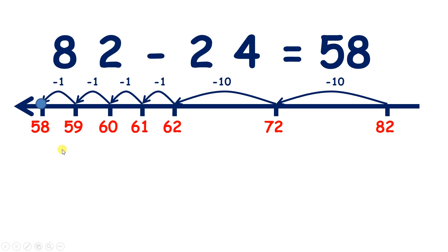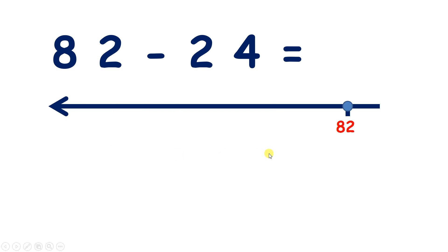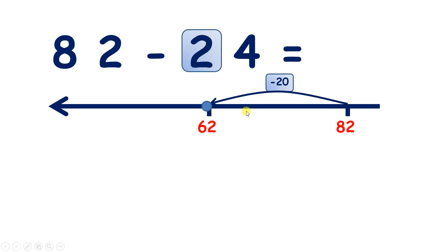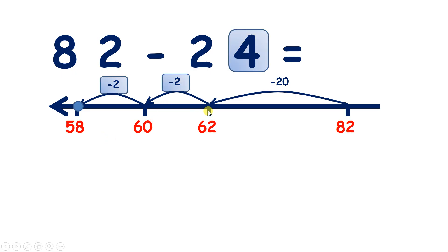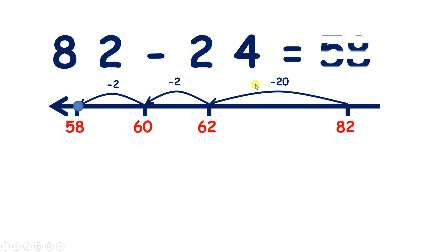But how could we do this in fewer steps on a number line? Let's subtract 20 all in one go. If we start with eight tens and take away two tens, we have six tens and still have those two units, so we have 62. That's our tens dealt with. Now we need to subtract our four units. If we take away two, we'll have 60. But we want to take away four, so if we've taken away two, we need to subtract two again to give us 58. So we've subtracted our units by bridging — we subtracted two to make the previous multiple of ten, then subtracted our two remaining units. So 82 take away 24 is 58.